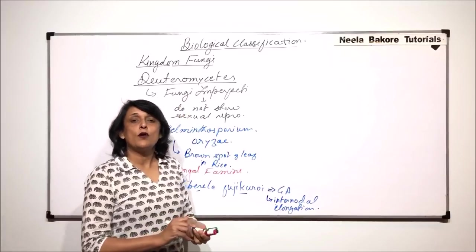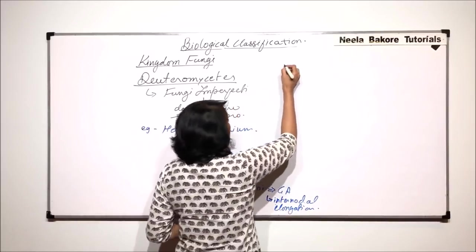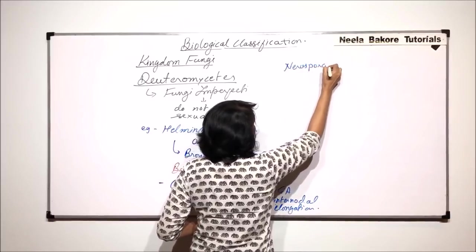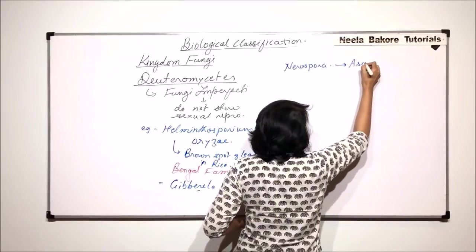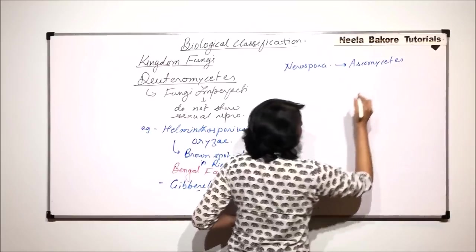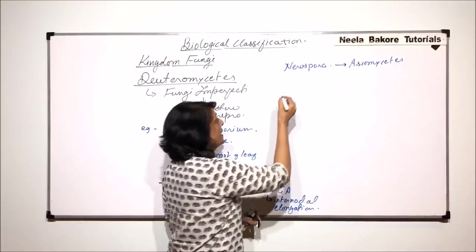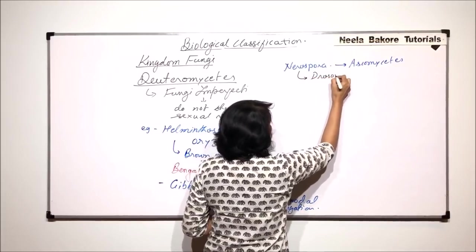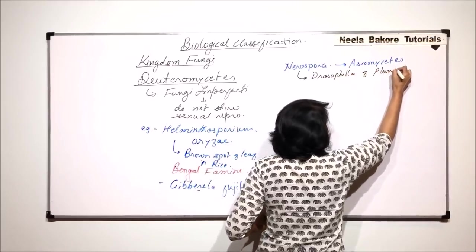Now let us talk of a few more important examples of Kingdom Fungi in general. One is Neurospora. Neurospora belongs to Ascomycetes, the same group to which yeast and Penicillium belong. Neurospora is commonly known as Drosophila of Plant Kingdom.